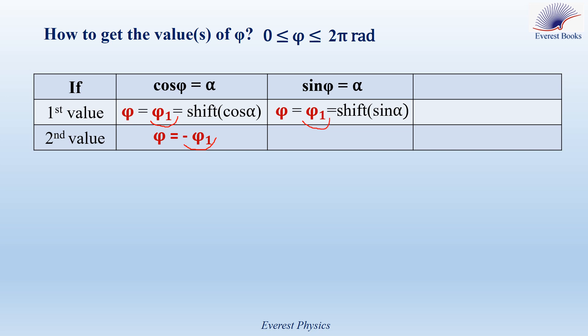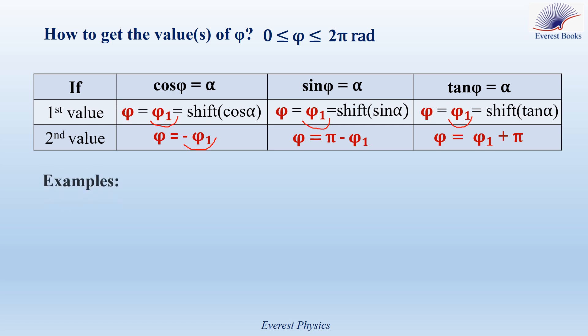The second value of phi is given by pi minus the first value of phi. For the tangent case, if tangent phi equals alpha, press shift tangent alpha on the calculator to get the first value phi1. The second value of phi is given by pi plus phi1. Let's take an example on each of these three cases.